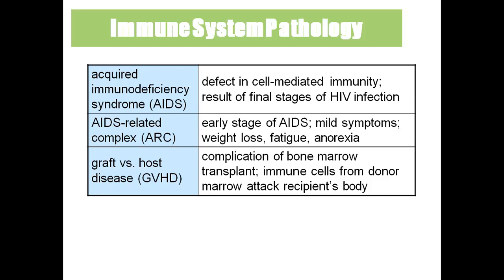Graft versus host disease — for example, if a person's kidney fails and they receive a donor kidney, even with a perfect match the body may not accept it because of immunity issues. The body recognizes it as not its own kidney and rejects it — that we call graft versus host disease.